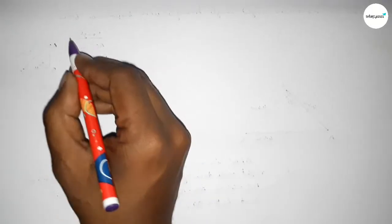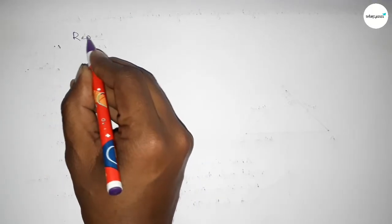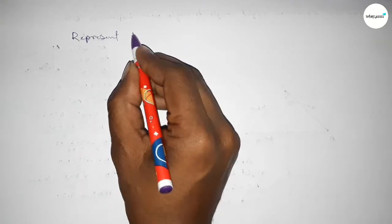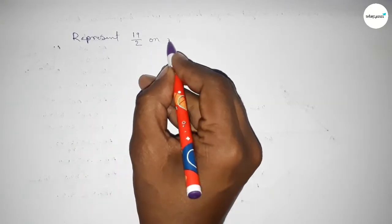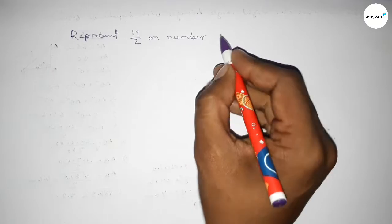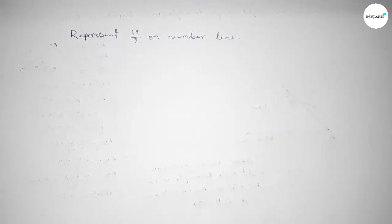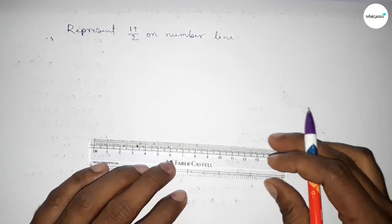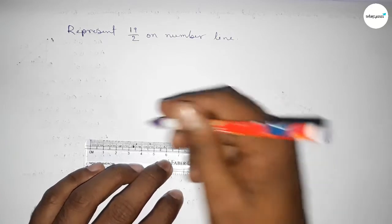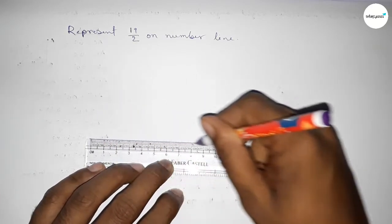Hi everyone, welcome to SSR Classes. Today in this video we have to represent 19 over 2 on number line. So let's start the video. First of all, we have to draw here the number line, so first drawing here a line of any length.